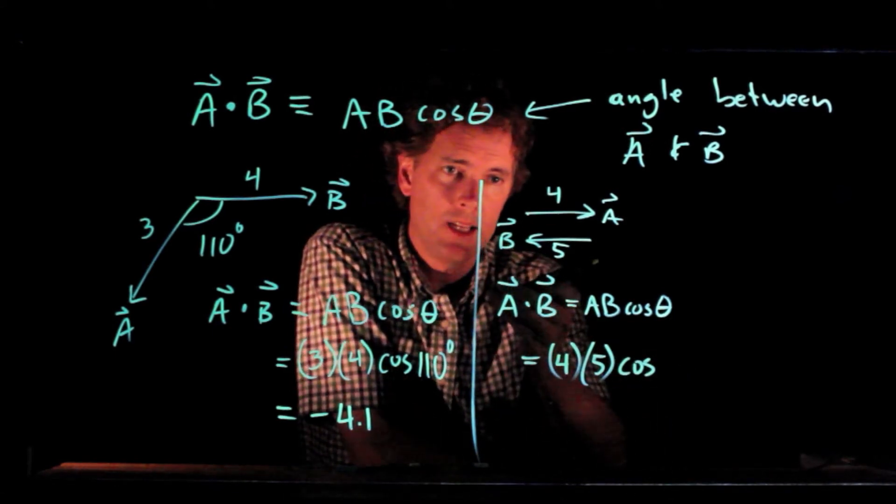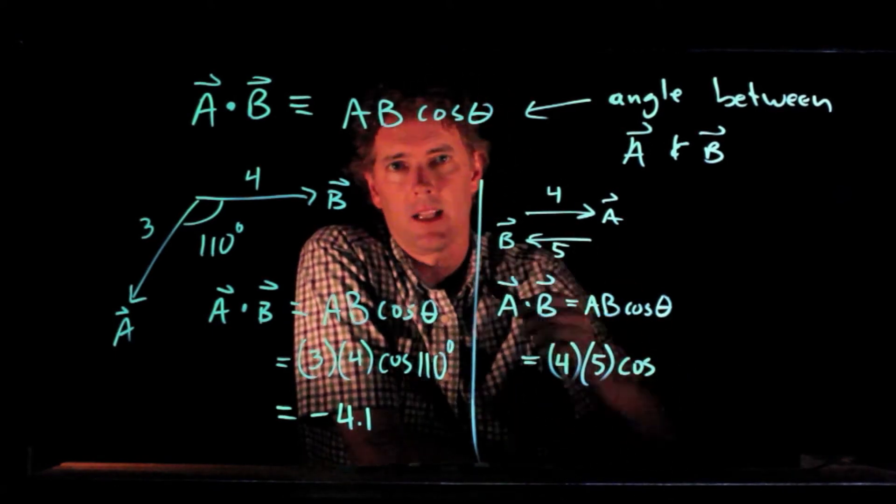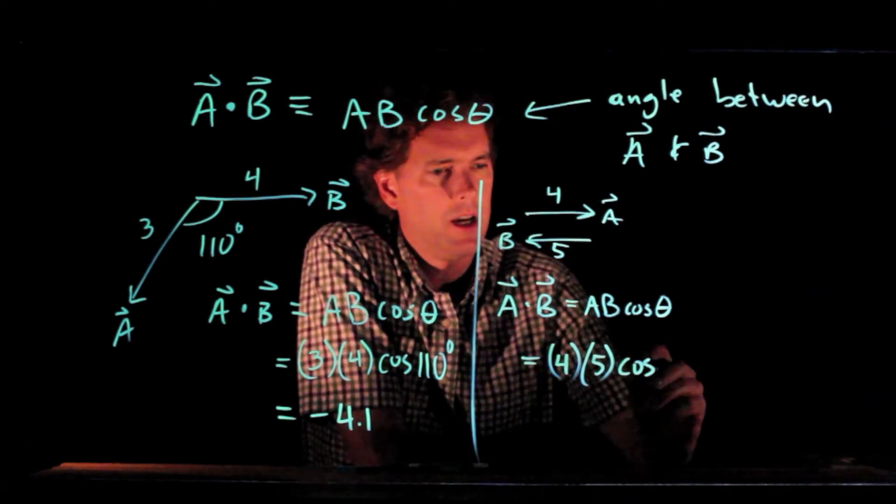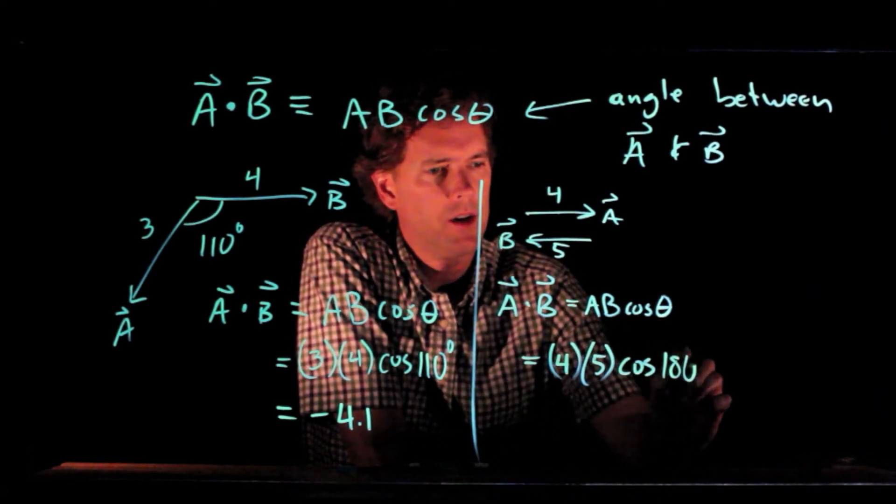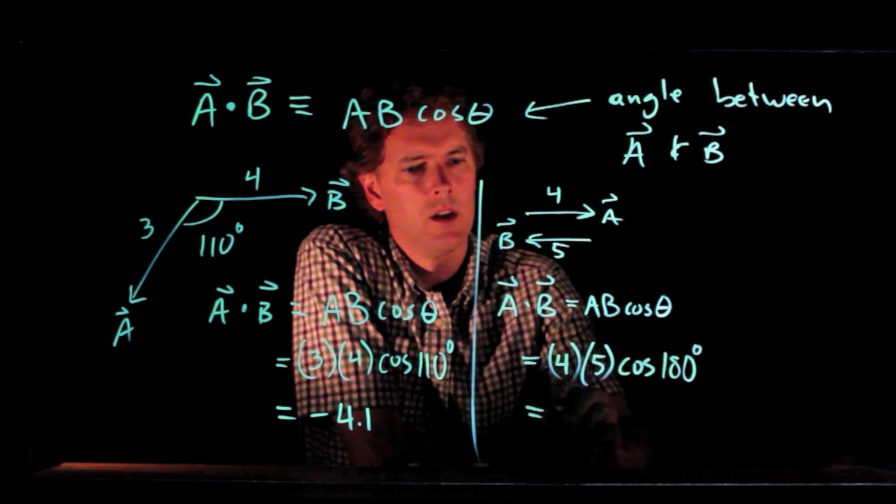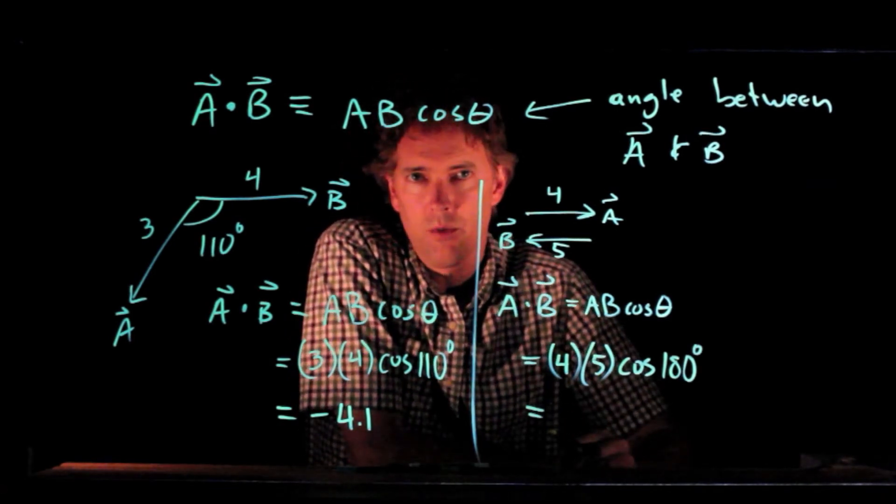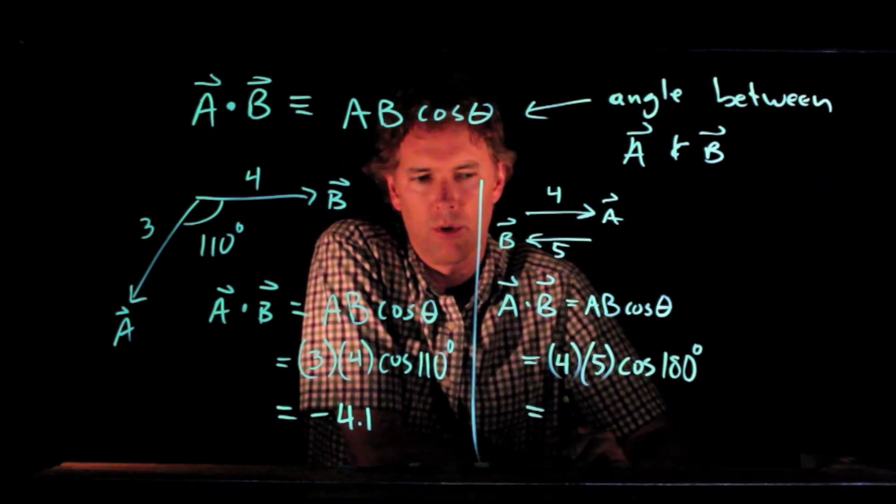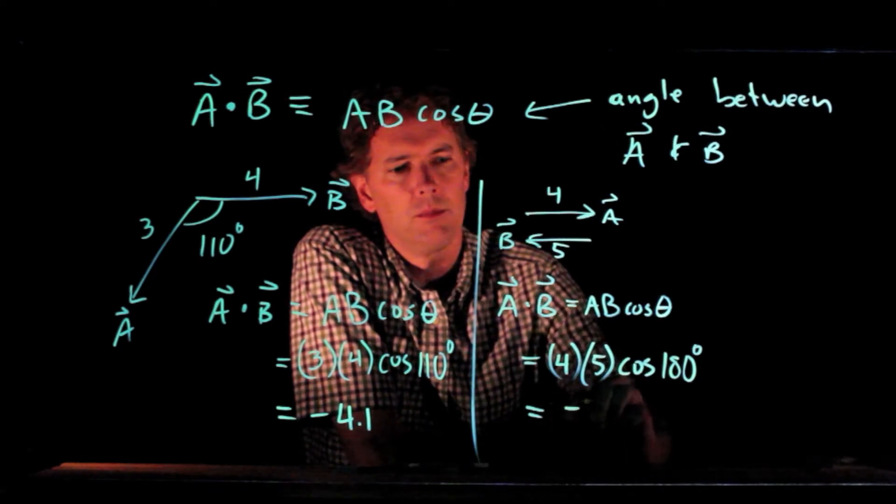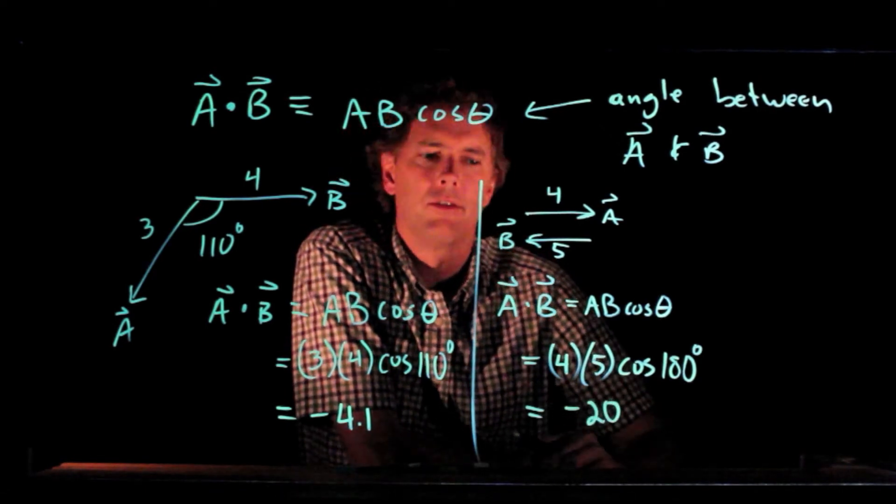A is pointing to the right, B is pointing exactly to the left. So theta is 180 degrees. Cosine of 180 degrees is negative 1. And so for this problem, we get negative 20.